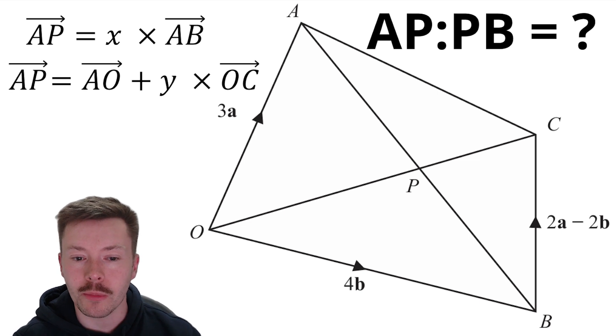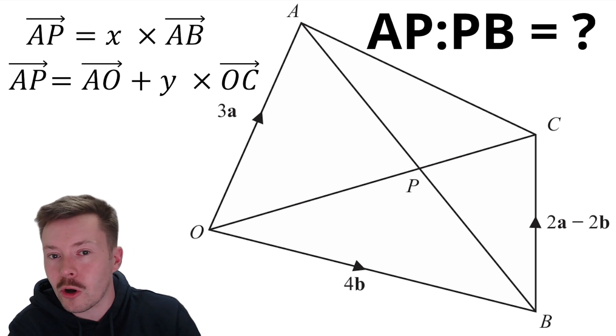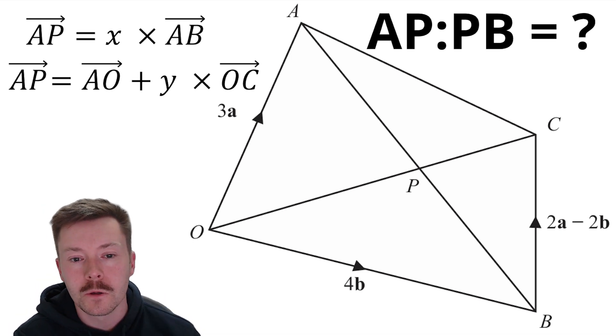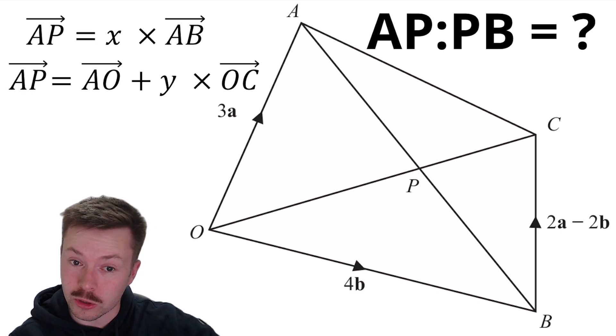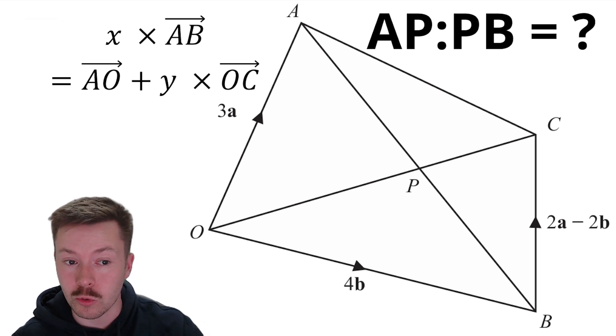The other way from A to P is to go from A to O and then do a fraction of the line from O to C. And again, I'm using this scale factor as Y instead of what you might see somewhere else as mu. Right, now I can start to replace or I can equate these two things first of all. So because these are both AP, these things must be equal to each other.